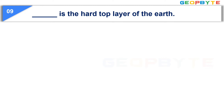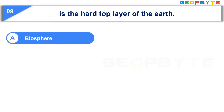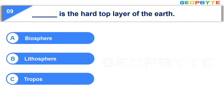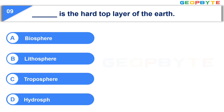Dash is the hard top layer of the earth. Option A: Biosphere. Option B: Lithosphere. Option C: Troposphere. Option D: Hydrosphere. Your time starts now.